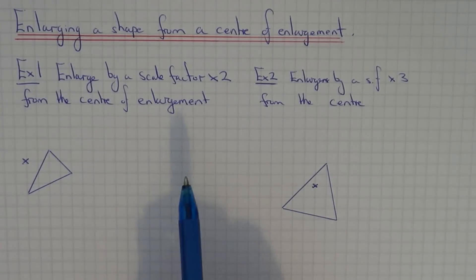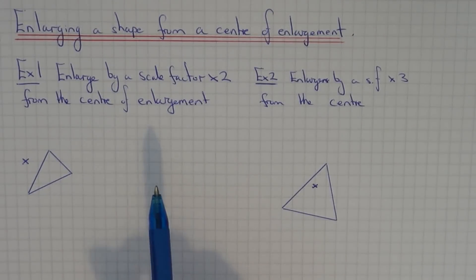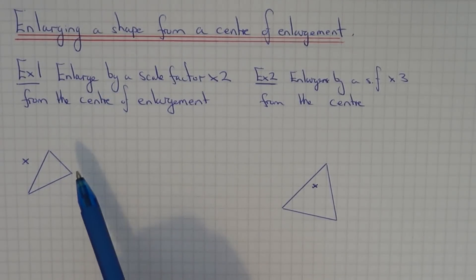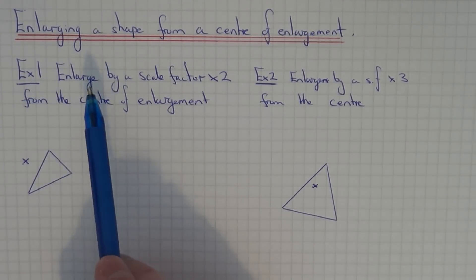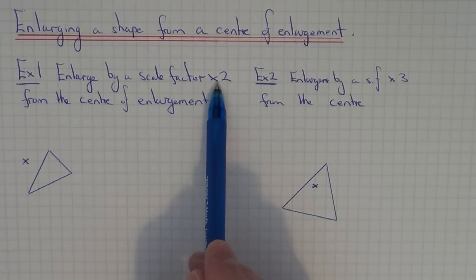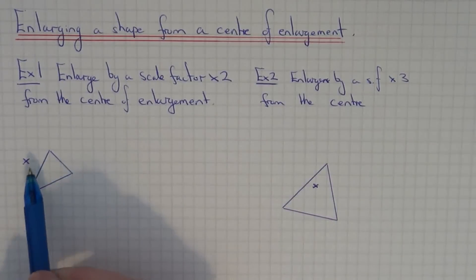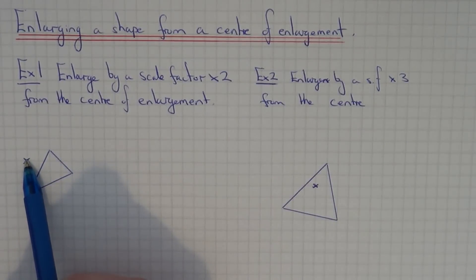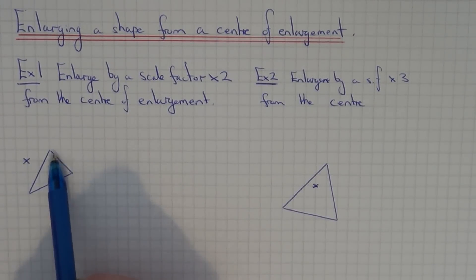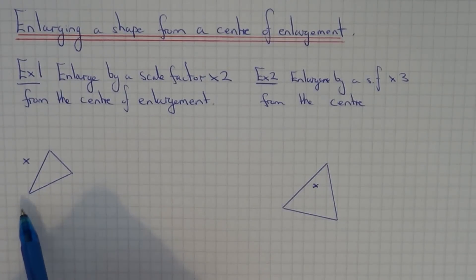Today I'm going to show you how to enlarge a shape from a centre of enlargement. So let's have a look at example one. We've got to enlarge the shape by a scale factor times two from the centre of enlargement. Here's your centre of enlargement. We have to enlarge this triangle by a scale factor times two, which means we've got to make it twice as big.